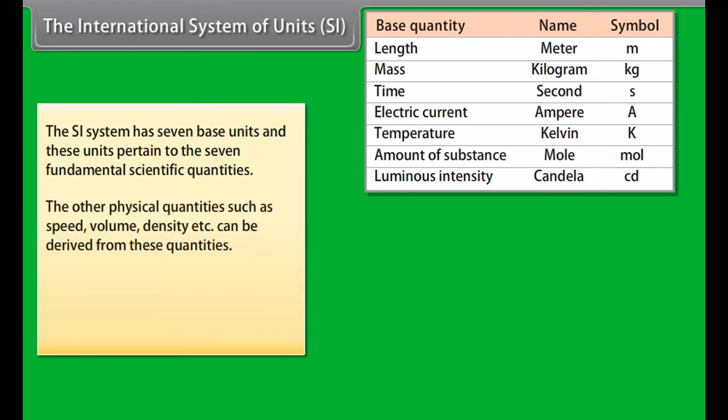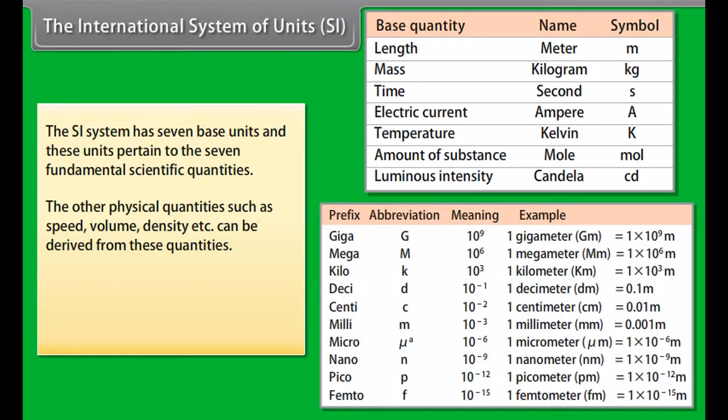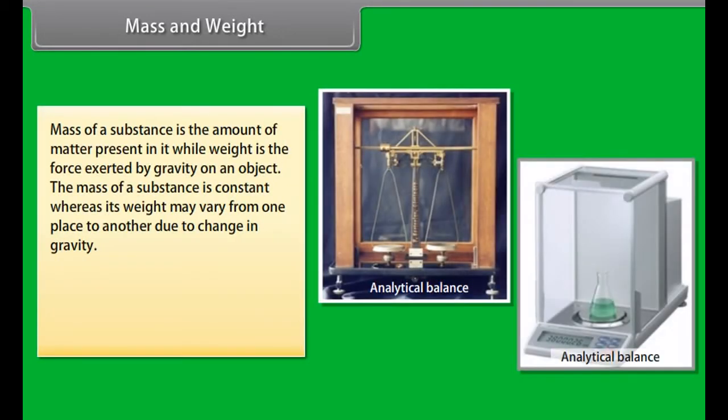Compound: When two or more atoms of different elements combine, the molecule of a compound is obtained. The examples of some compounds are water, ammonia, carbon dioxide, sugar, etc.